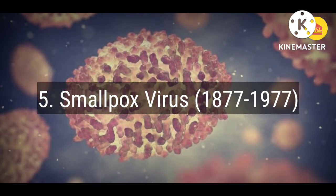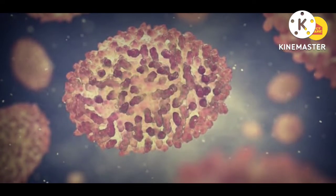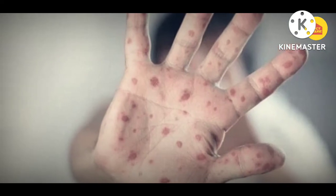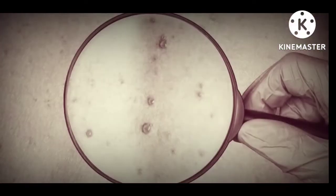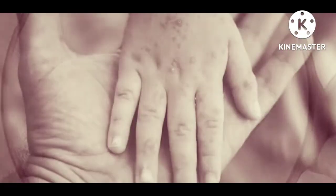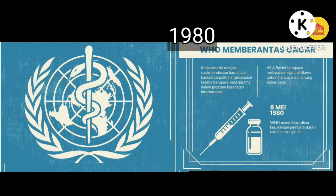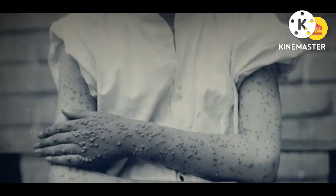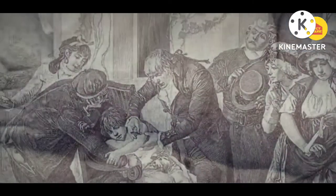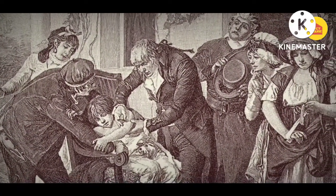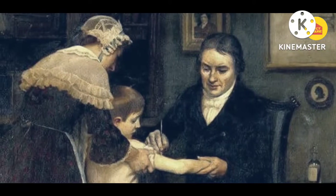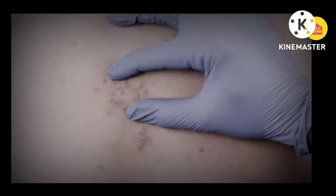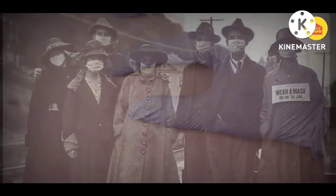Number 5. Smallpox Virus, 1877-1977. The fifth deadly disease epidemic in history is smallpox. As a result of this disease, an estimated 500 million people have died. It is caused by two smallpox viruses, spread by touching an infected object or person. In 1980, the World Health Organization declared that smallpox must be eradicated. Smallpox causes small sores throughout the body that fill with fluid, scab, and cause scarring, blindness, and even death. Before a proper vaccine was discovered, one method of developing immunity was to take dry smallpox scabs from a deceased person, crush them, and inhale them.